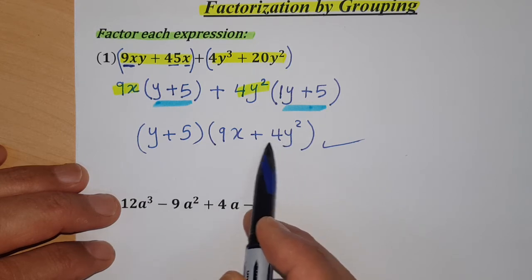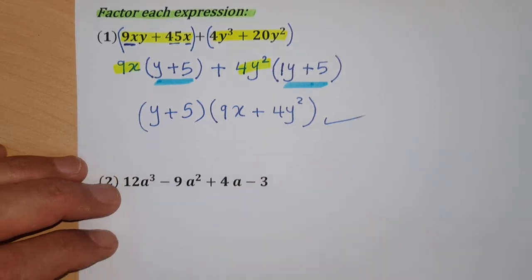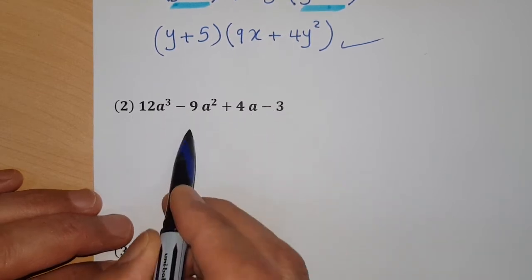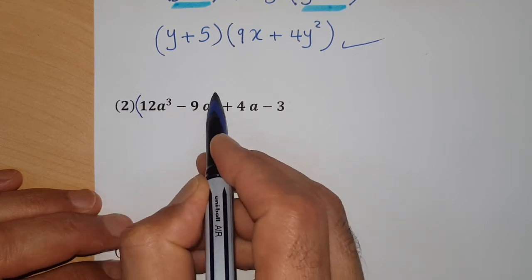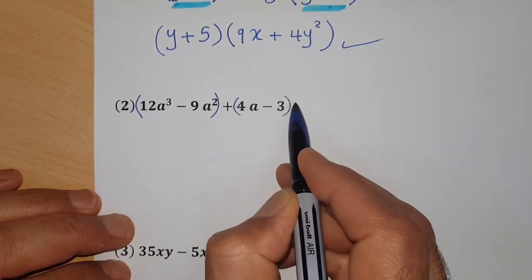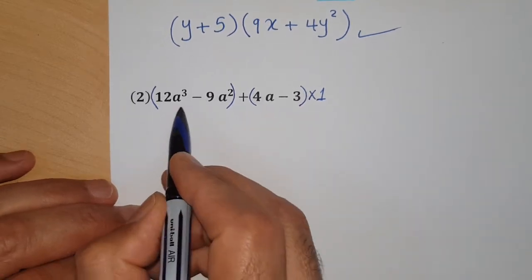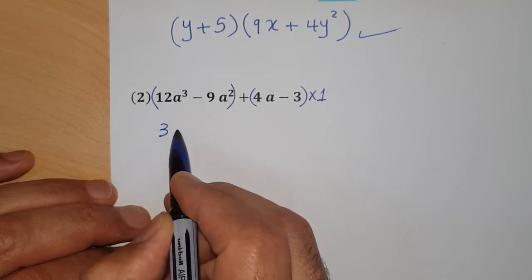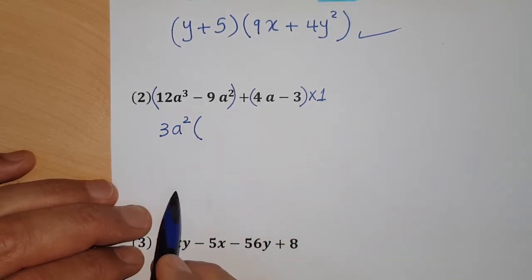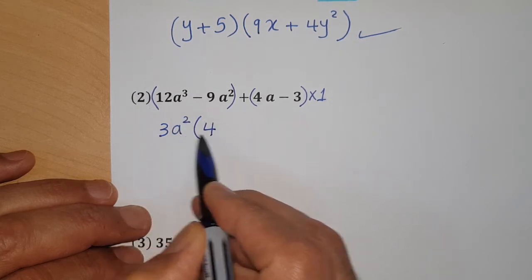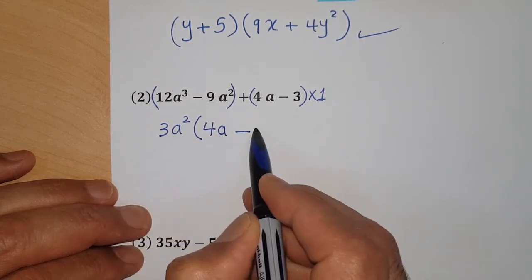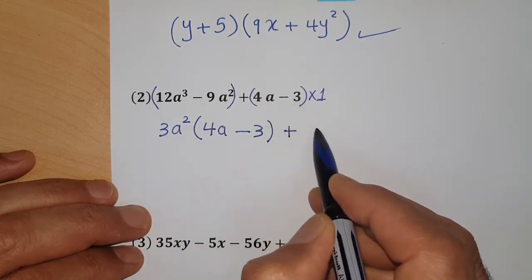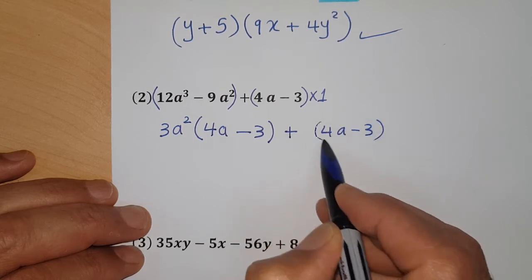Next example: 12a³ - 9a² + 4a - 3. I have a common factor between the first and second terms. For the last two terms, there's no common factor — just consider it as a times 1. For the first group, 12 and 9 are both divisible by 3, and a² is the highest common factor. Divide: 12 divided by 3 is 4, a³ over a² is a. Minus 9 divided by 3 is 3, a² over a² is 1.